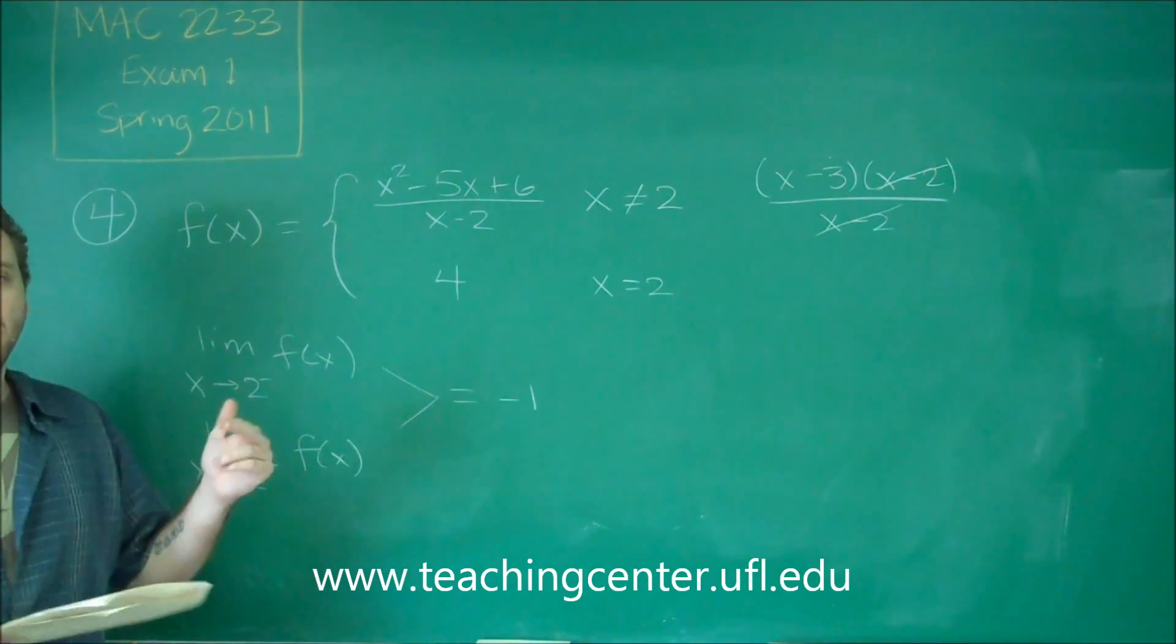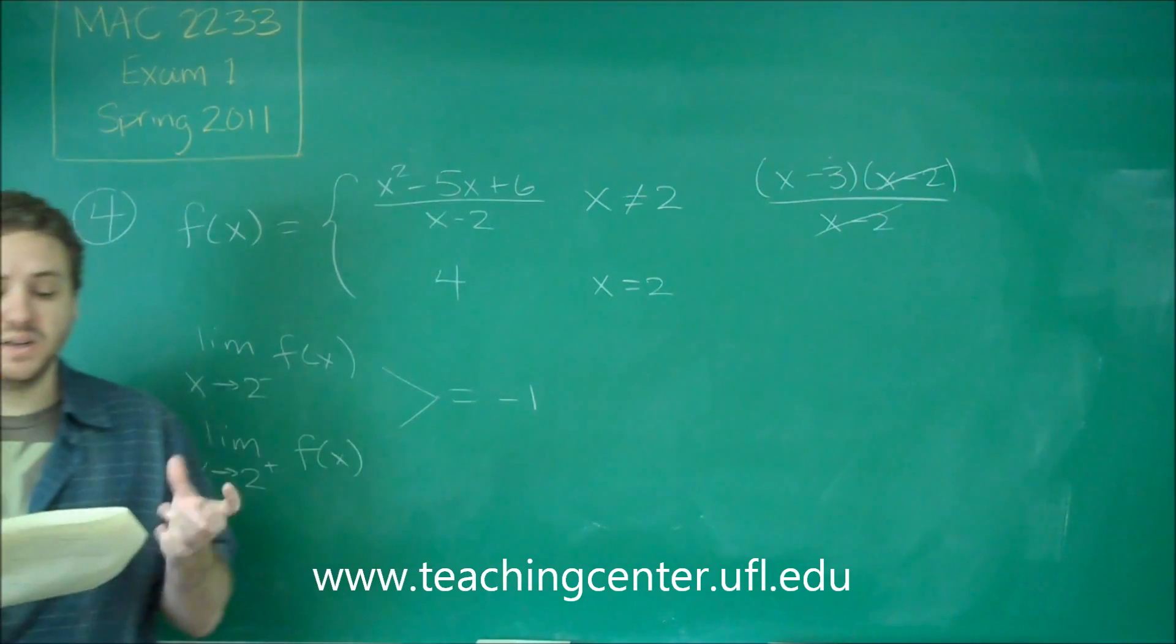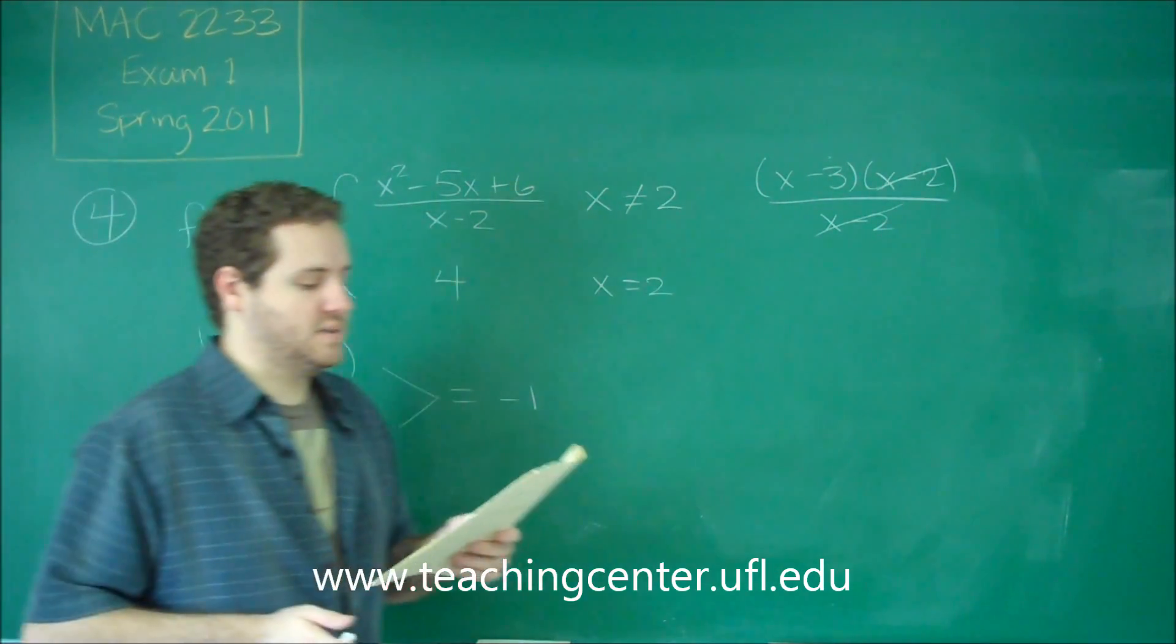These are clearly equal. Therefore, the limit as x approaches 2 does exist, and it is negative 1, which is answer choice D.